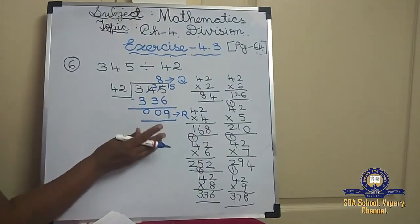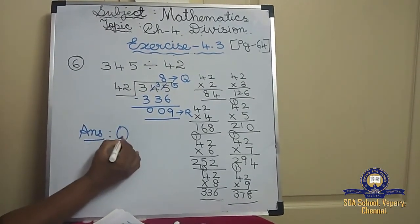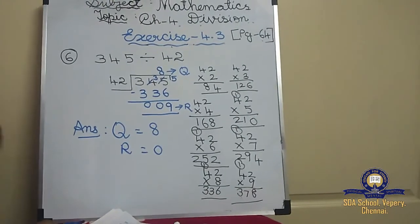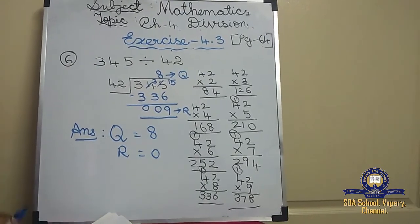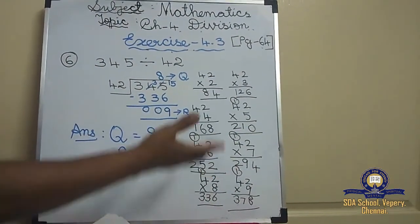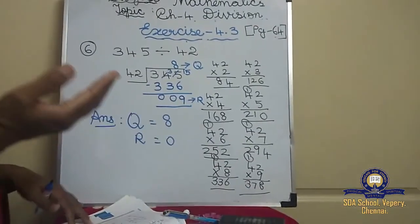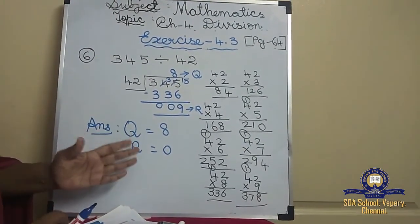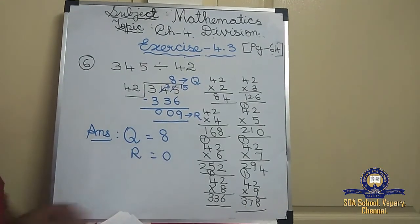The answer: quotient is equal to 8 and remainder is equal to 9. Don't forget to write like this — if you do the sums this way, it will be very easy for you. If you don't write like this, you can't find the answer. Don't waste time; go on practicing in the rough note. This continuation I will be teaching in the next class.